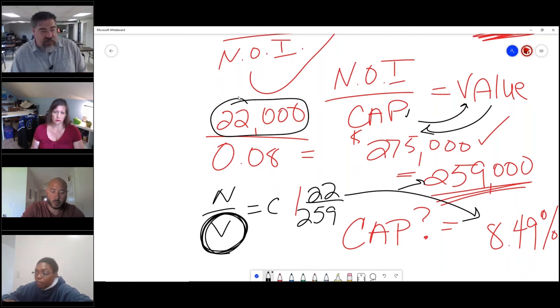I got 0.085, which is 8.5%. Yes, that's what I got. I got 8.49%. So now the only difference here is we now have a new value—the value we use is what we literally actually sold it for. It's still got the $22,000 NOI, but now it's $259,000, and you get that cap rate. So we listed it at an 8% cap but we actually sold it to an investor at an 8.49% or 8.5% cap.